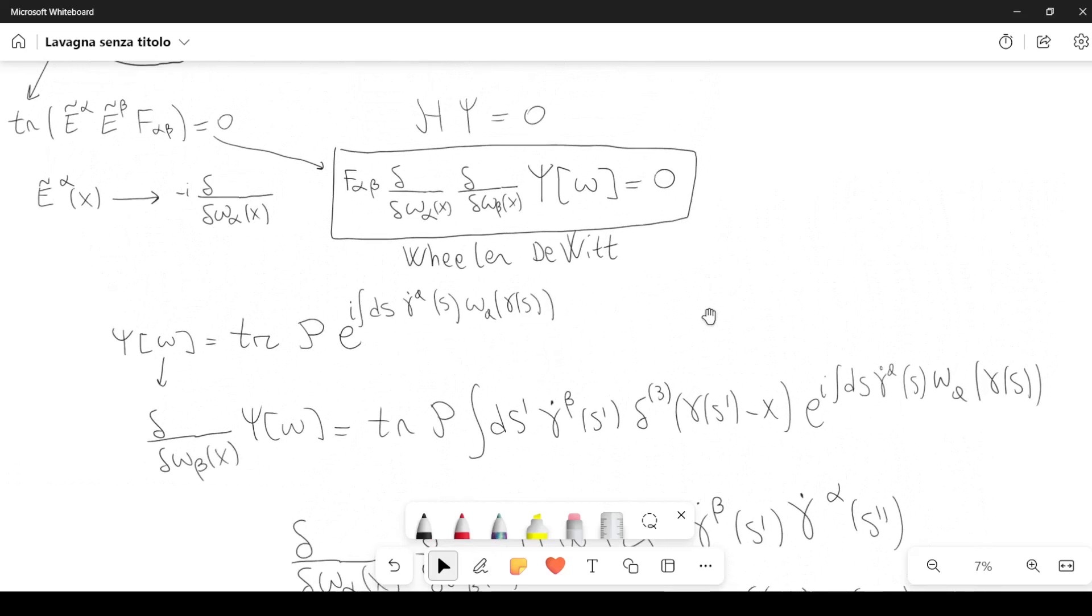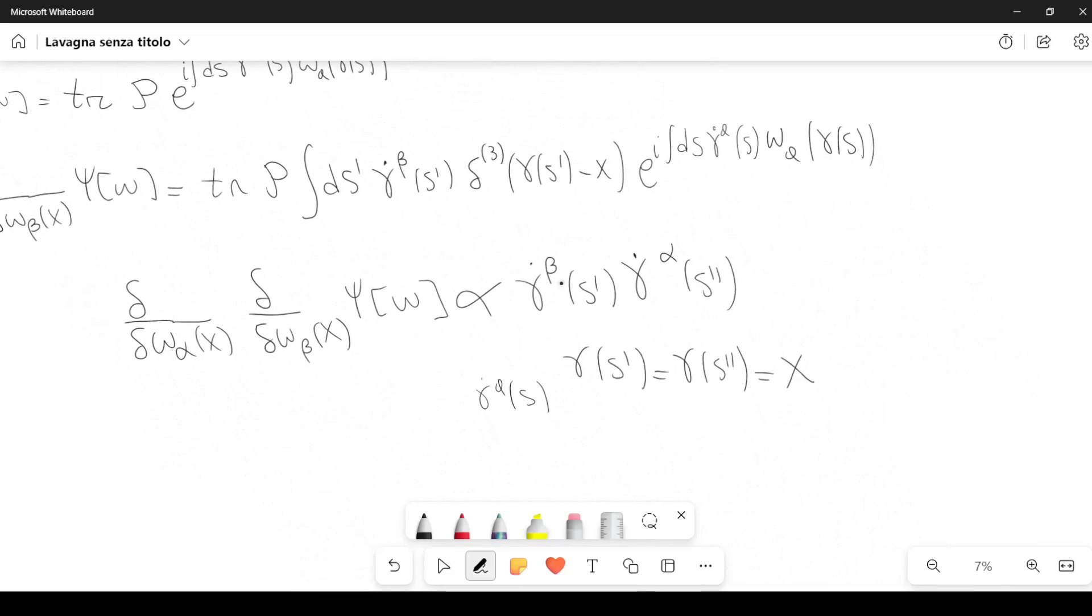you can see from here that when I multiply by f alpha beta, and I sum over alpha and over beta, since f alpha beta is anti-symmetric, then when we sum this multiplied by f alpha beta here as well, then this will give us zero.